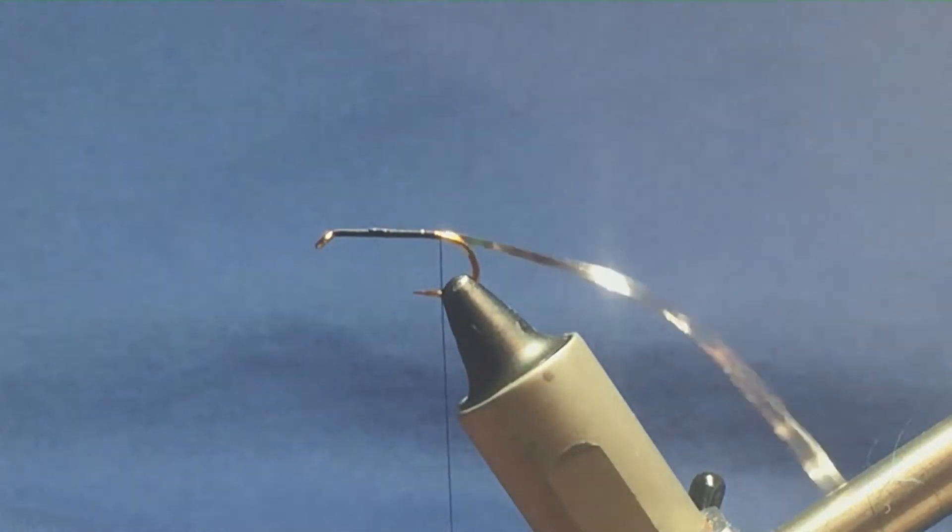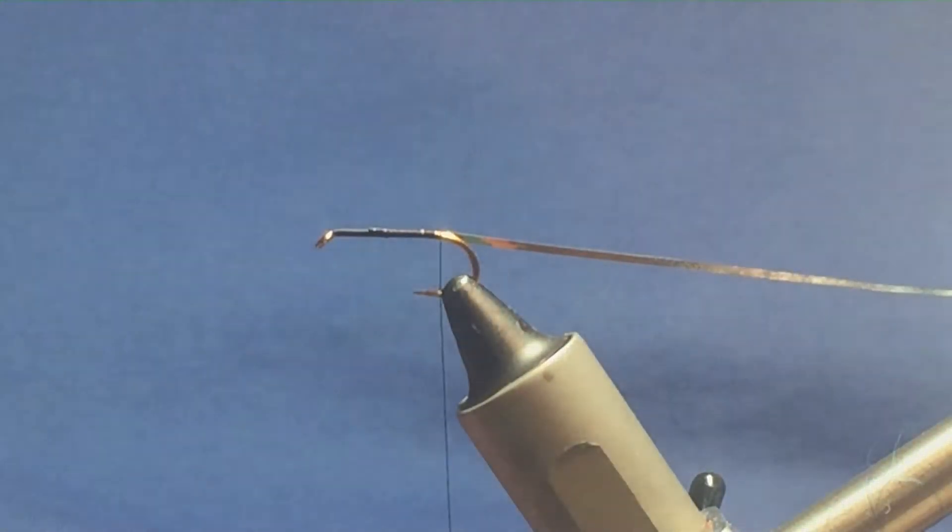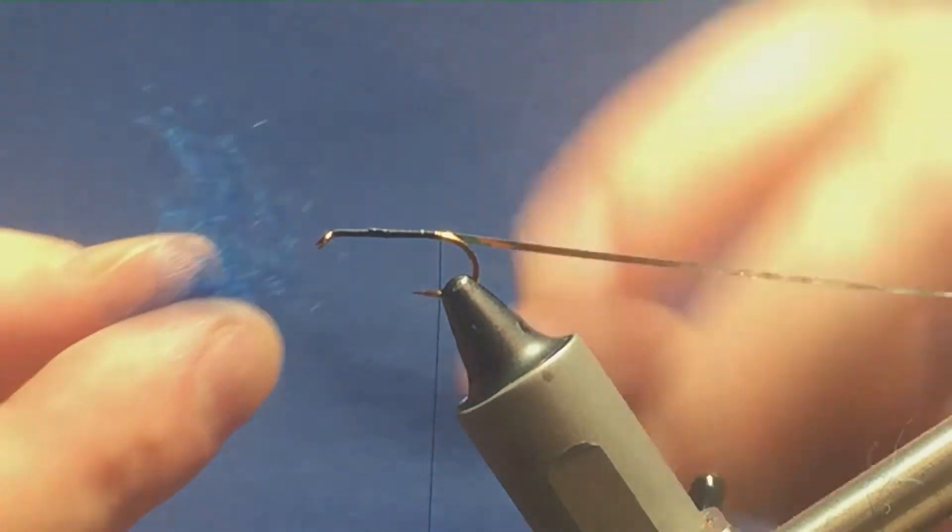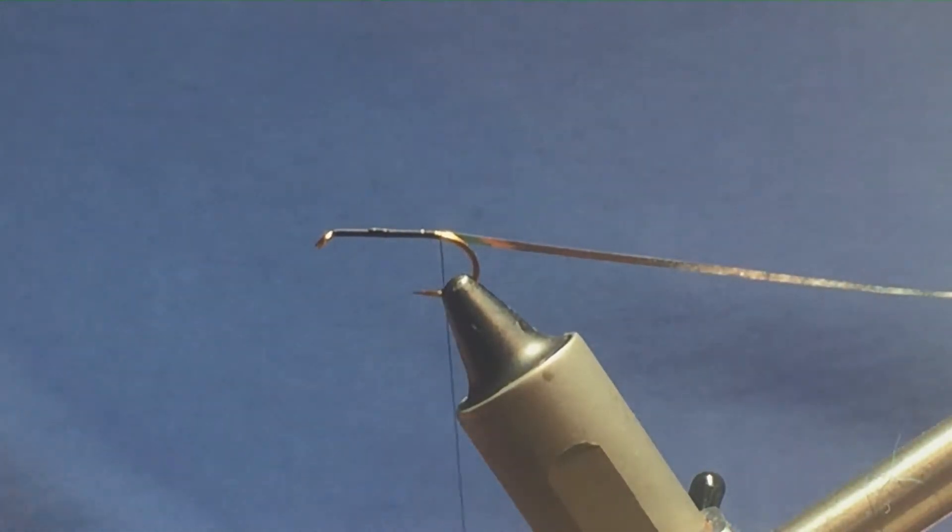I'm just going to bring my thread down until I'm level with the barb of the hook. Now the dubbing that I'm going to use is the Donegal Blue dubbing, the traditional Irish dubbing, so I'm going to use this for the body. Let's come in,